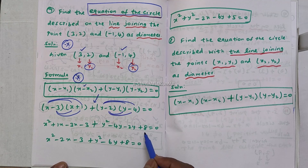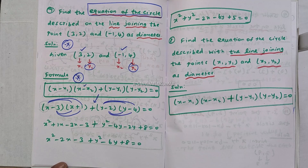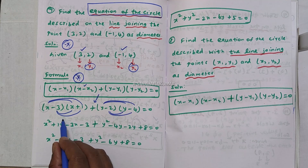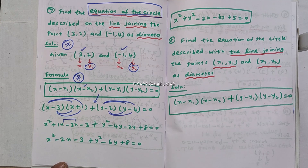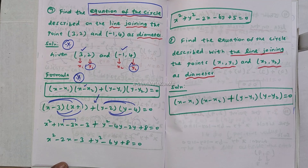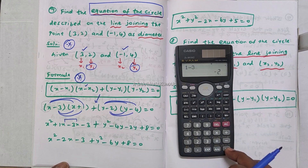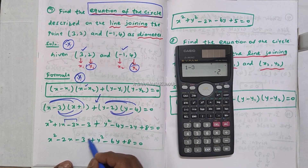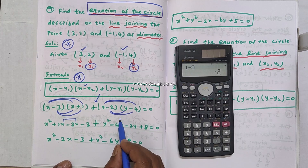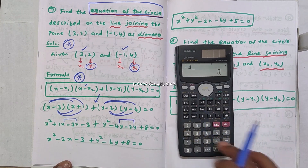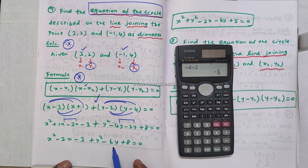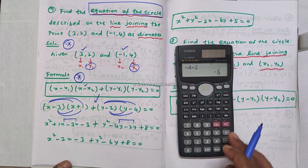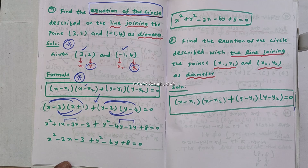y into y is y squared, y into minus 4 is minus 4y, minus 2 into y is minus 2y, minus 2 into minus 4 is plus 8, equal to zero.